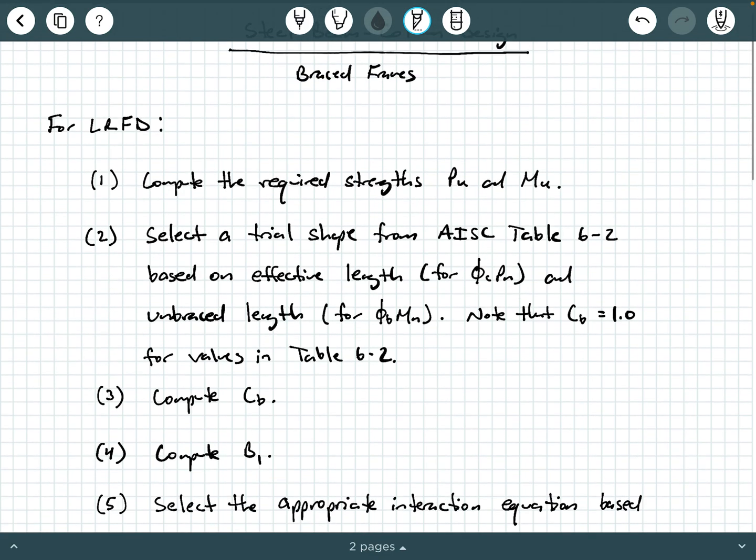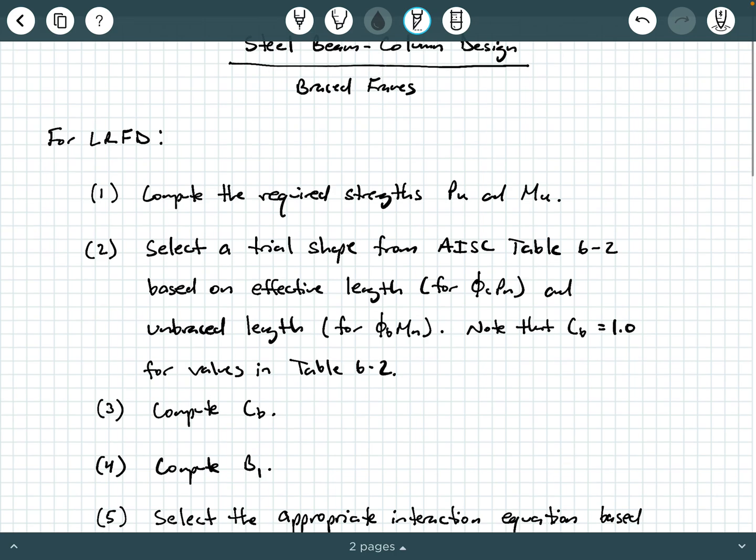Then what you're going to do is you're going to compute your B1 factor, your moment amplification factor to account for P little delta effects. We've done that in previous videos when we were checking beam columns. But you're going to compute this B1, and again, it's going to be based on the trial shape you got from step two.